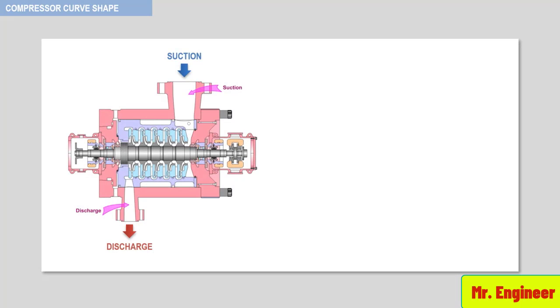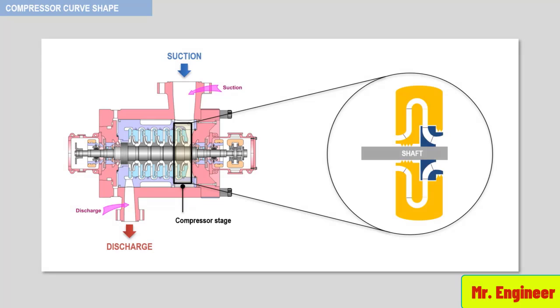To begin our discussion, let's observe a typical compressor stage. Here you can see a cut section of a multistage centrifugal compressor. An example of a stage is highlighted here. As you can see, a compressor stage is symmetrical, so we can focus on the upper half of it.